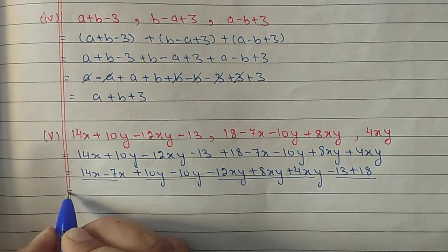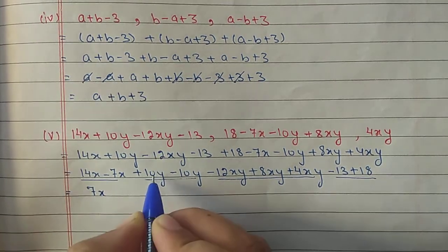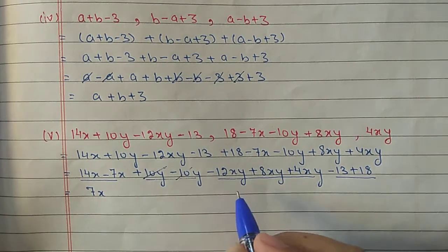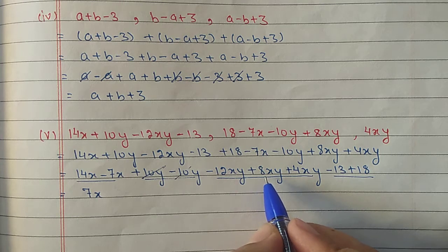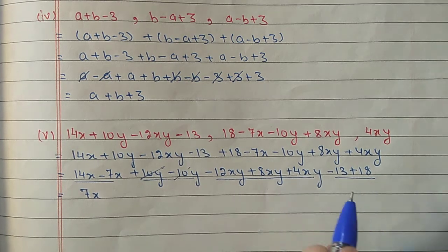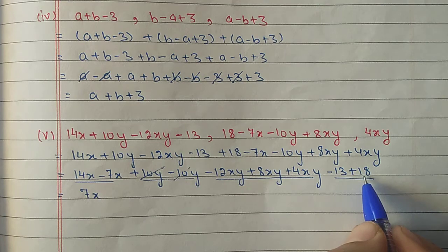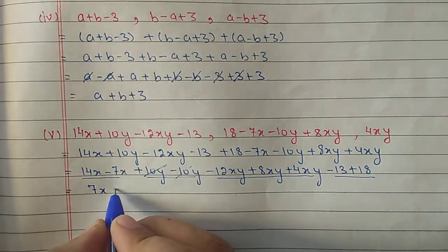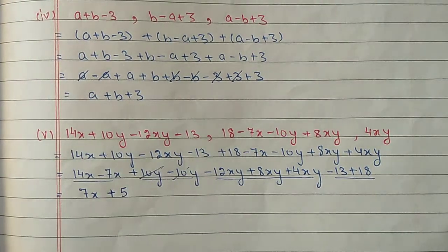Simplifying: 14 minus 7 gives 7x; plus 10 minus 10 cancels out; minus 12 plus 8 gives minus 4, and minus 4 plus 4 also becomes 0; minus 13 plus 18 gives plus 5. So the answer is 7x plus 5.